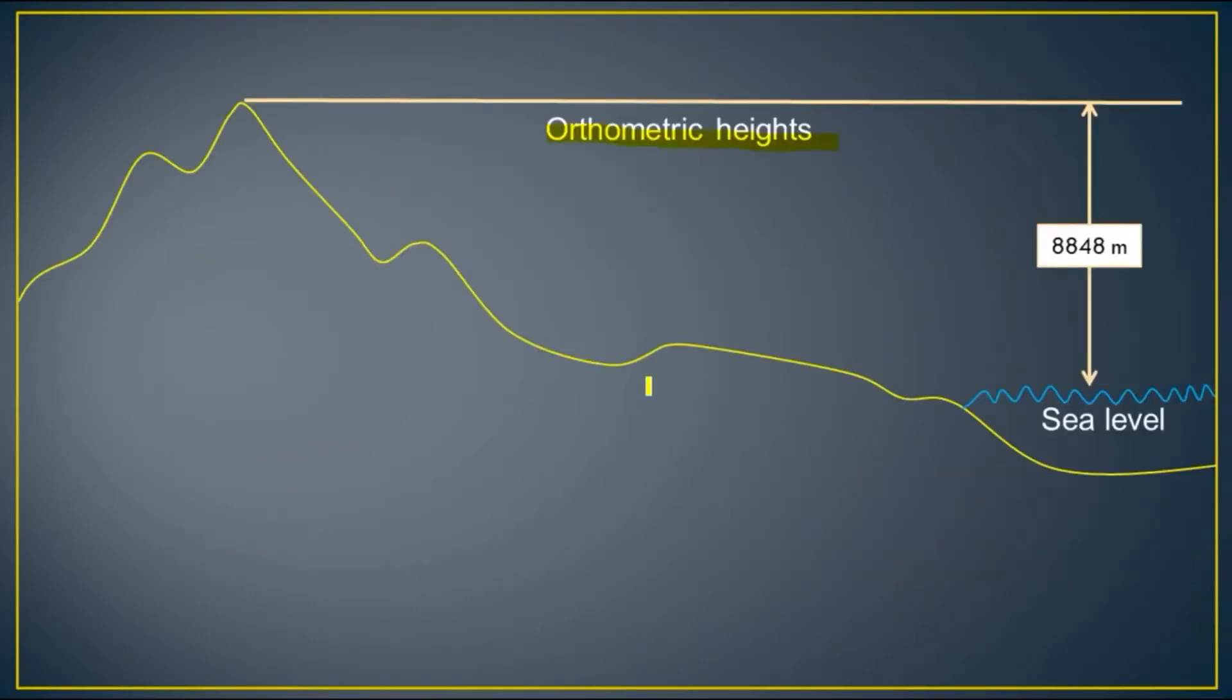Height of any topography is called orthometric height, where mean sea level creates a local reference surface. For example, when we measure the height of Mount Everest from mean sea level, we technically use the orthometric height using local reference surface.